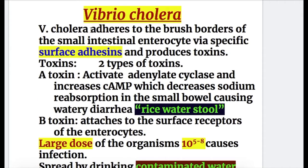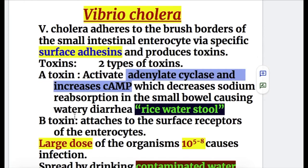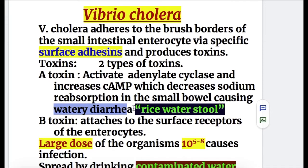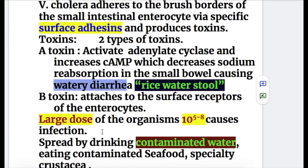Now let's discuss Vibrio cholerae. Vibrio cholerae adheres to the brush borders of the small intestinal enterocytes via specific surface adhesins and produces two types of toxins. The A-type toxin activates adenylate cyclase, increases cyclic AMP, and decreases sodium reabsorption in the small bowel, causing watery diarrhea or rice water stools. The B-toxin attaches to the surface receptors of the enterocytes. Large numbers of Vibrio cholerae — 10⁵ to 10⁸ organisms — are required to cause infection.